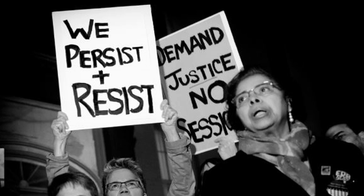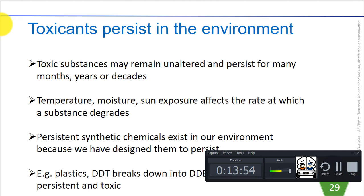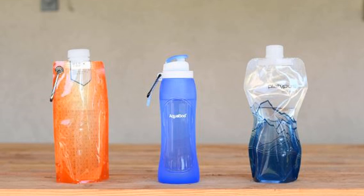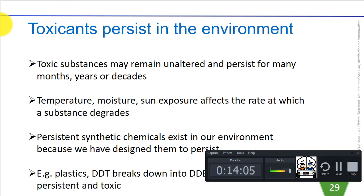We have designed many synthetic chemicals to persist — meaning they don't degrade easily — because we make them to be more durable, otherwise customers will complain. For instance, we use a lot of plasticizers in plastics because we like them to resist breaking down.